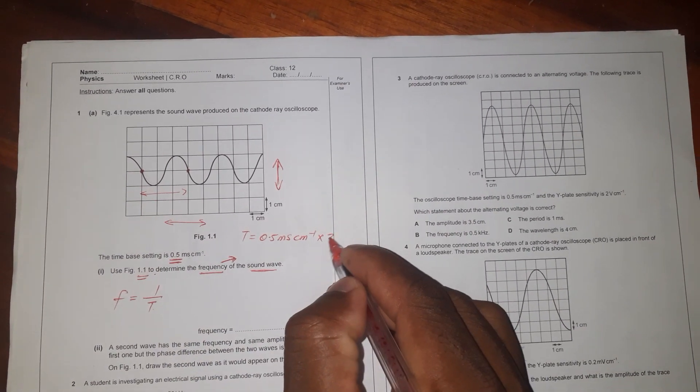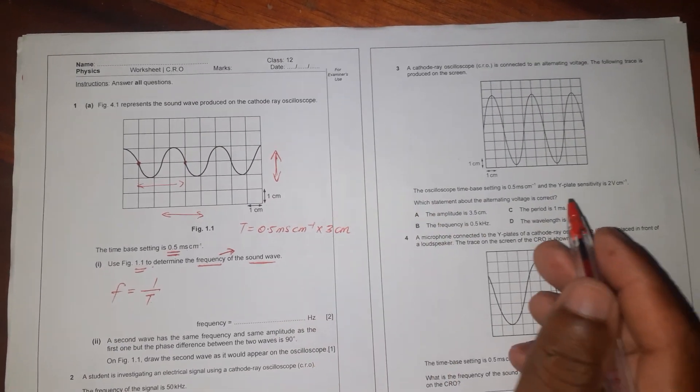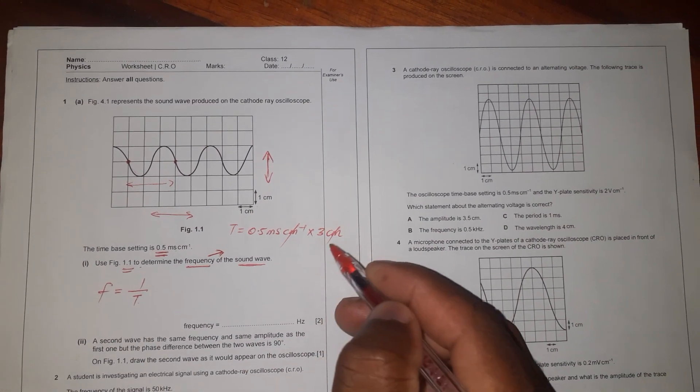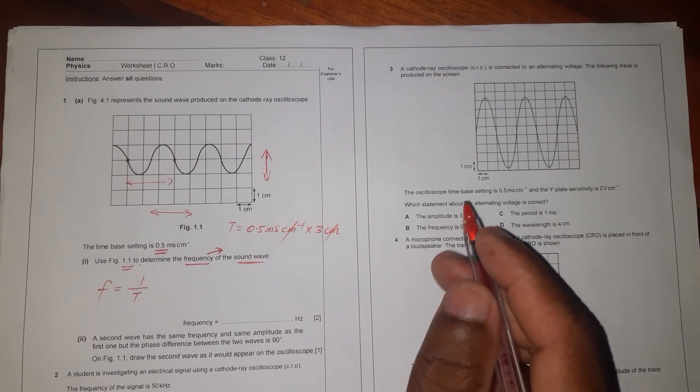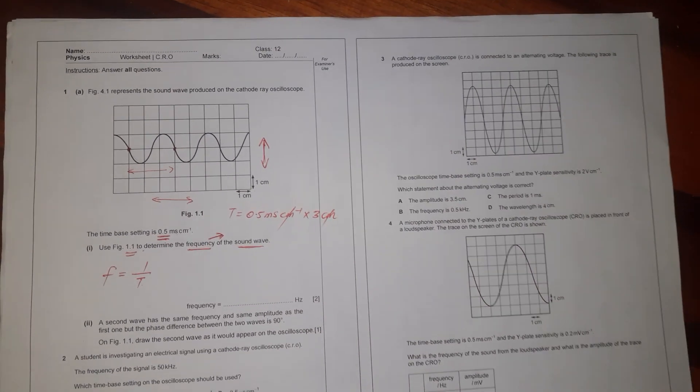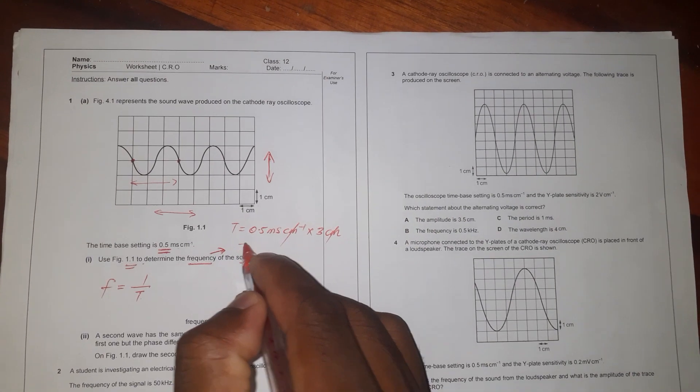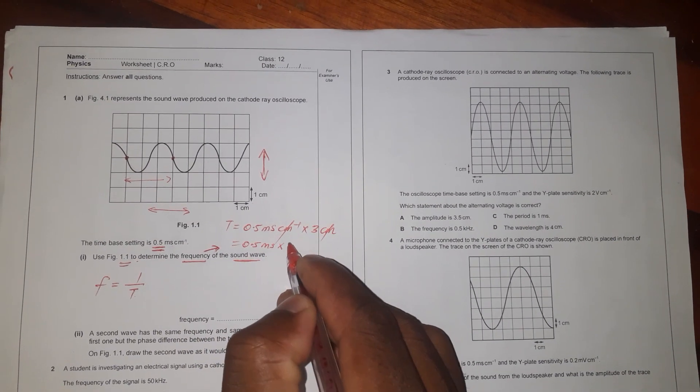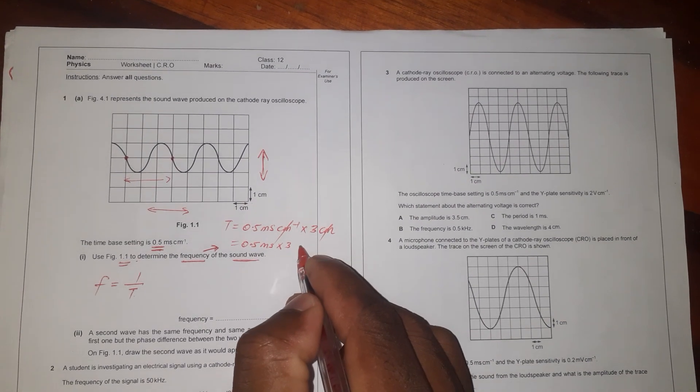Therefore, if we have three of them, it means three centimeters. Why am I doing that? So that this centimeter and that centimeter can cancel out. And then I now have 0.5 milliseconds times three, which will give me 1.5 milliseconds.